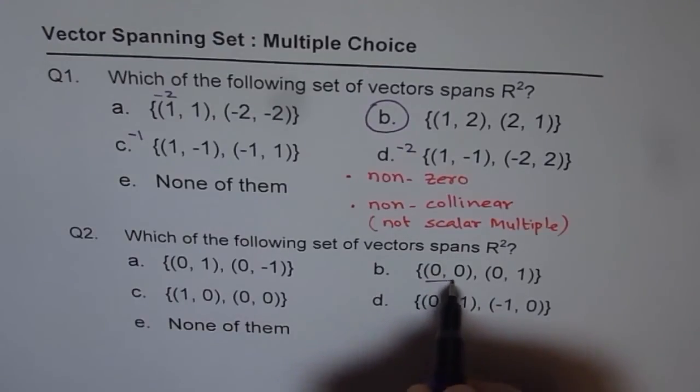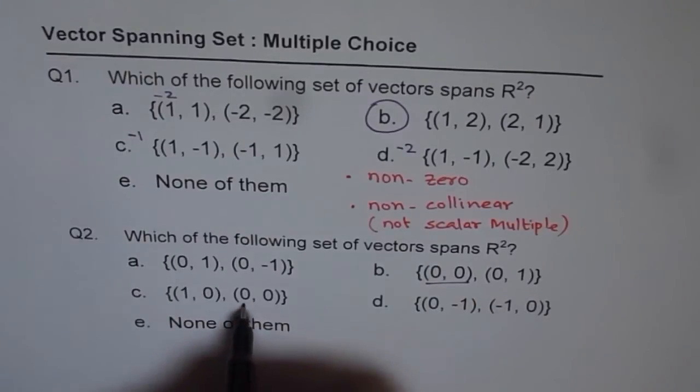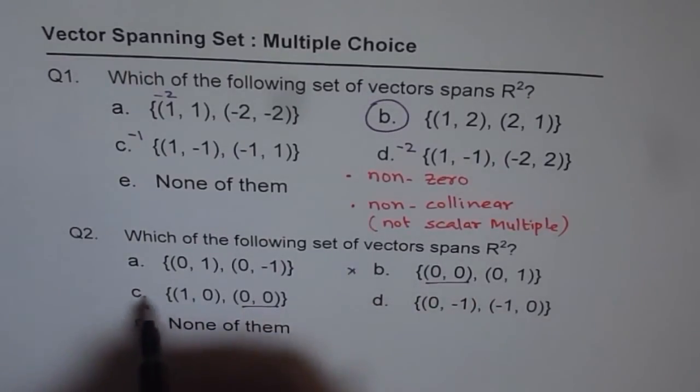So these are zeros, zero vectors and zero vectors. So these are not our options.